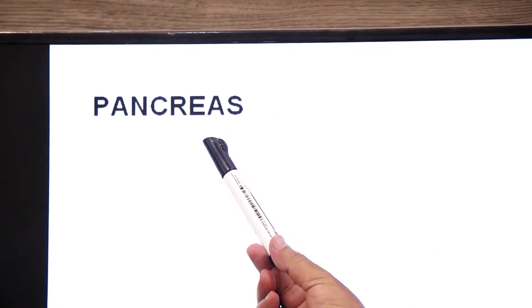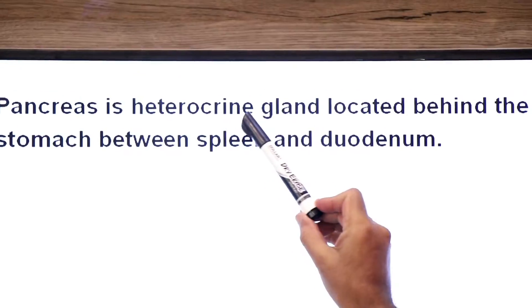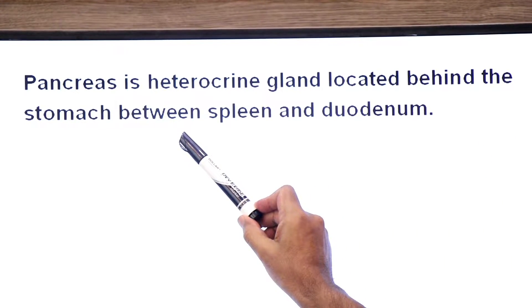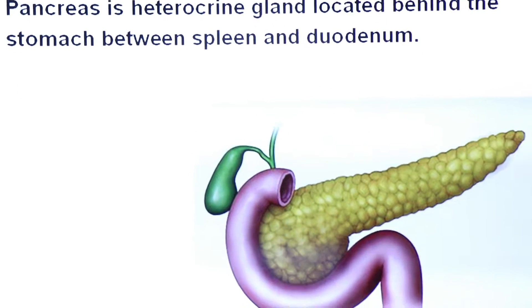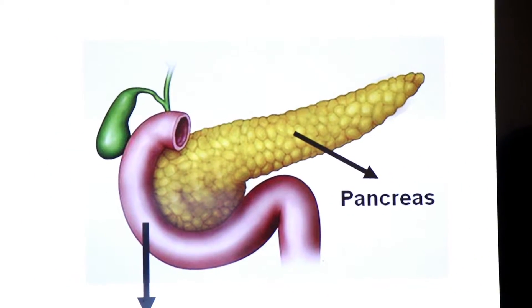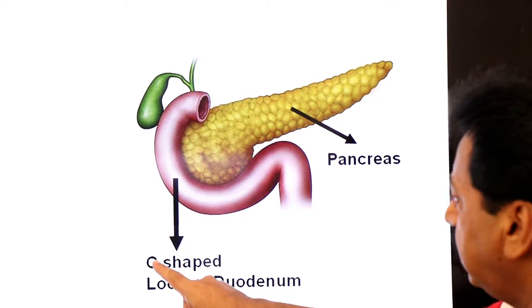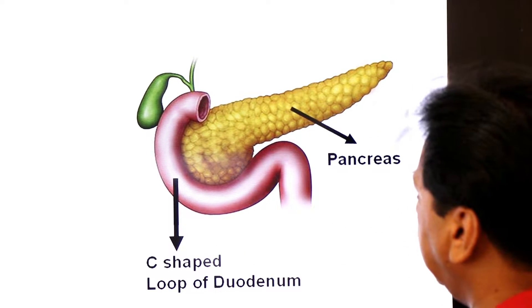Assalamu alaikum, namaste dear students. Today we are going to talk about pancreas and functions of pancreas. Pancreas is a heterocrine gland located behind the stomach, between the spleen and duodenum. This is the diagram showing pancreas, and this is the C-shaped loop of duodenum. This is the location of pancreas.